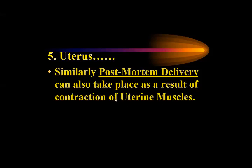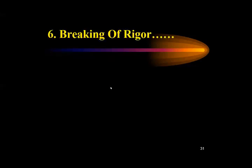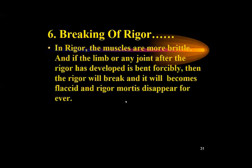What is breaking of rigor? In rigor mortis, the muscles are more brittle. If a limb or any joint after rigor has developed is bent forcibly, the rigor will break and the limb will become flaccid — and the rigor mortis disappears forever. It does not appear again after breaking of rigor.